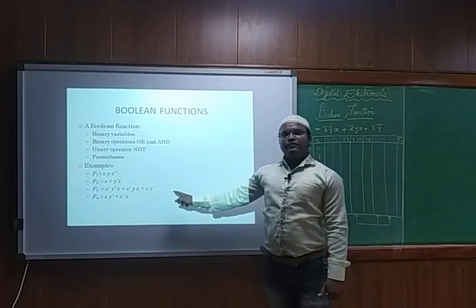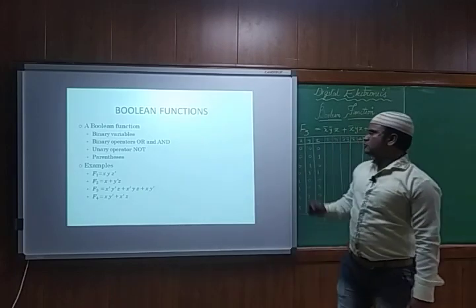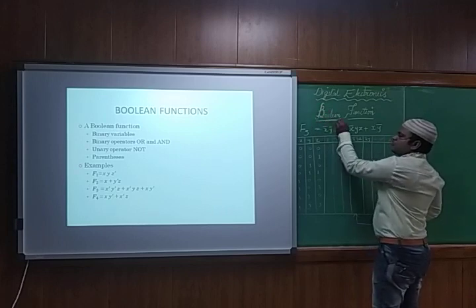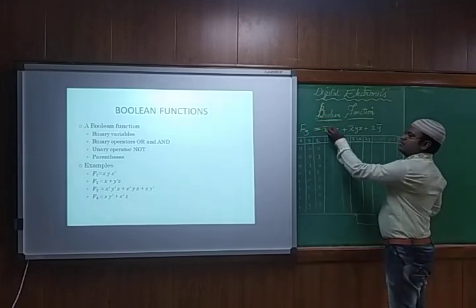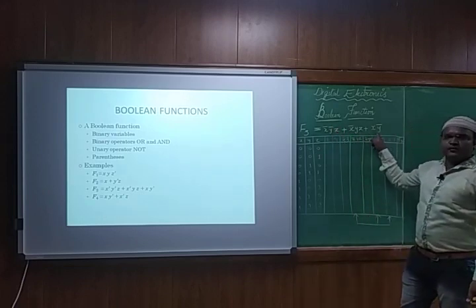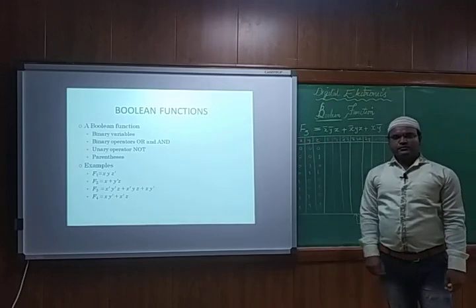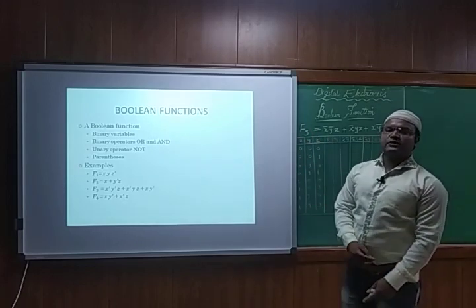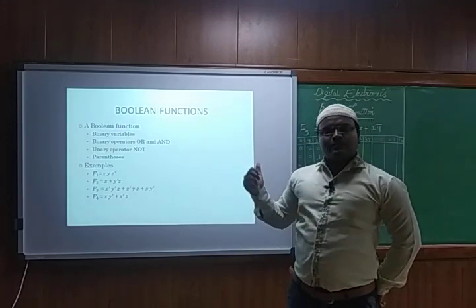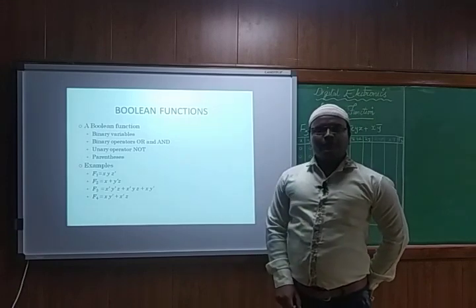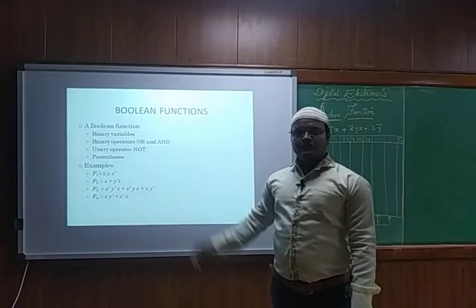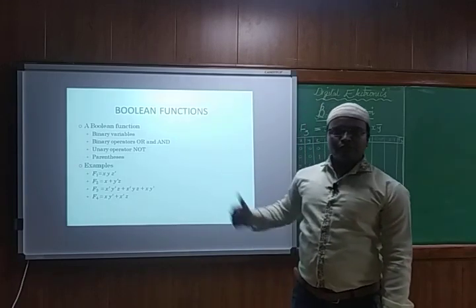So f3 we need to simplify; we need to solve that function by using a truth table. The Boolean function f3 is given as x̄ȳz + x̄yz + xȳ. These functions can be solved by using two methods: one method is by truth table, and the second one by using the hardware design, that means by using the logic gates.